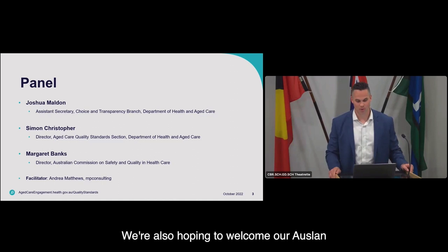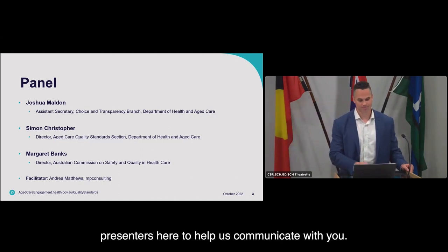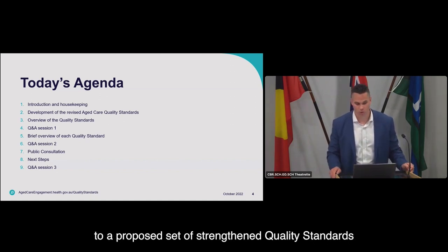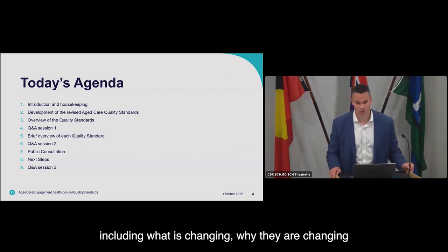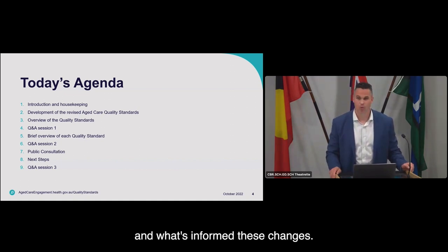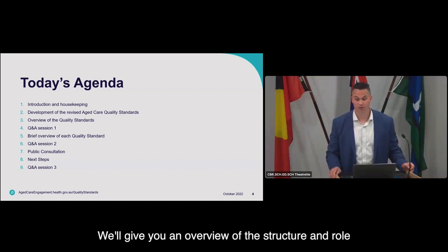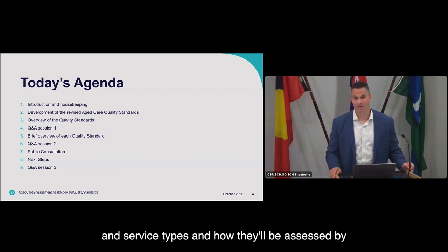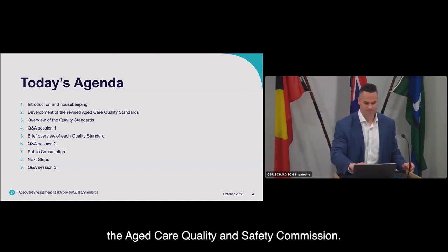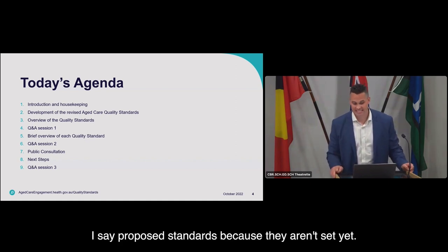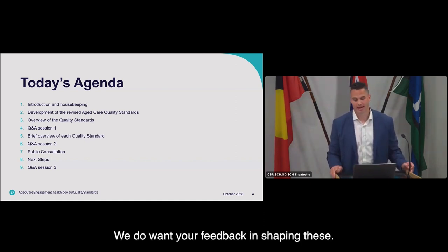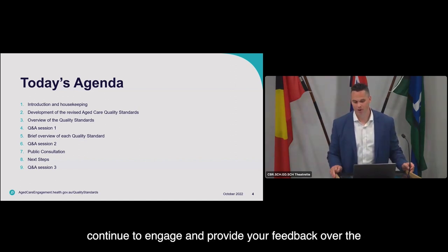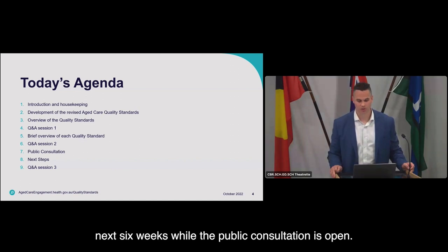We're also hoping to welcome our Auslan presenters. The purpose of today's webinar is to introduce you to a proposed set of Strengthened Quality Standards, including what is changing, why they're changing, and what's informed these changes. We'll give an overview of the structure and role of the standards, how they apply to different providers and service types, and how they'll be assessed by the Aged Care Quality and Safety Commission. I say proposed standards because they aren't set yet — we do want your feedback in shaping them. We'll provide details of how you can continue to engage and provide feedback over the next six weeks while public consultation is open.